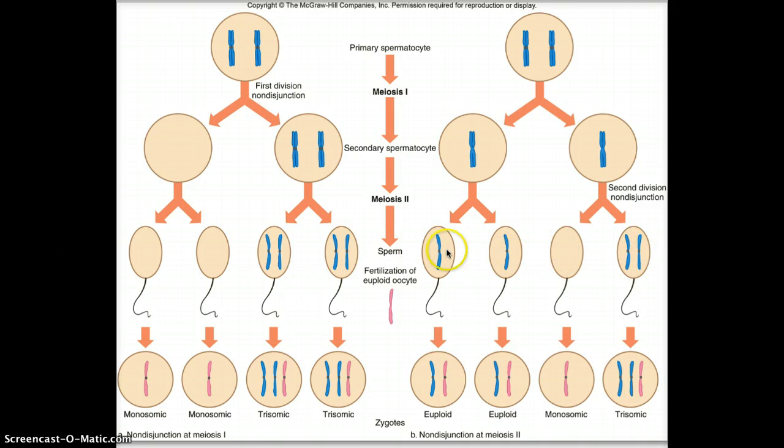So again, we've got our sperm here, and when we fertilize the egg, we end up with the wrong number of chromosomes. Now, remember, euploid means normal. So this side over here, this was normal, so these are euploid cells. And then we end up with, just as on the other side, either monosomy or monosomic or trisomy or trisomic.